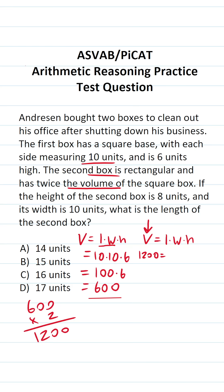We are going to be determining its length, so we'll leave that as L. Its width, according to the problem, is 10 units, and its height is 8 units. So this becomes 1,200 equals 10 times 8 is 80, so this is 80L. Let's solve for L by dividing both sides of the equation by 80.